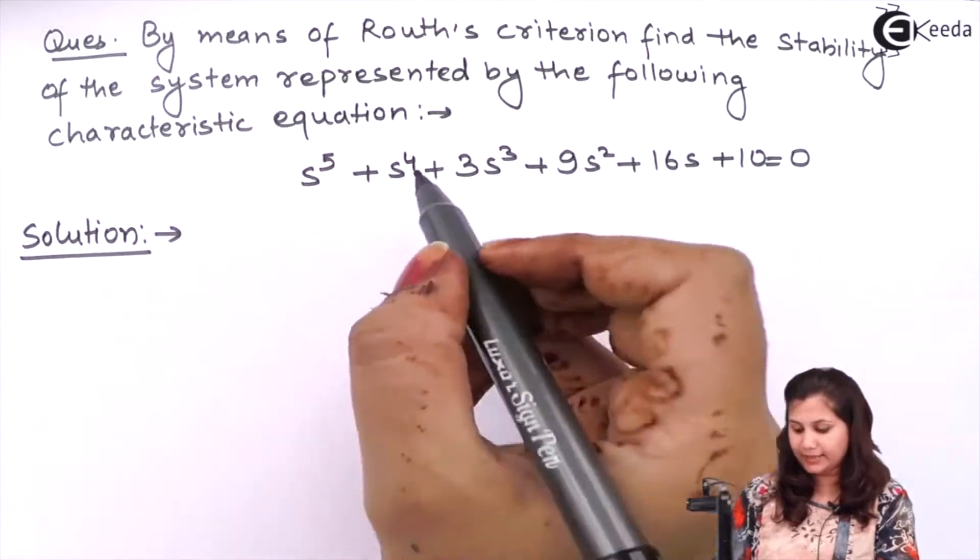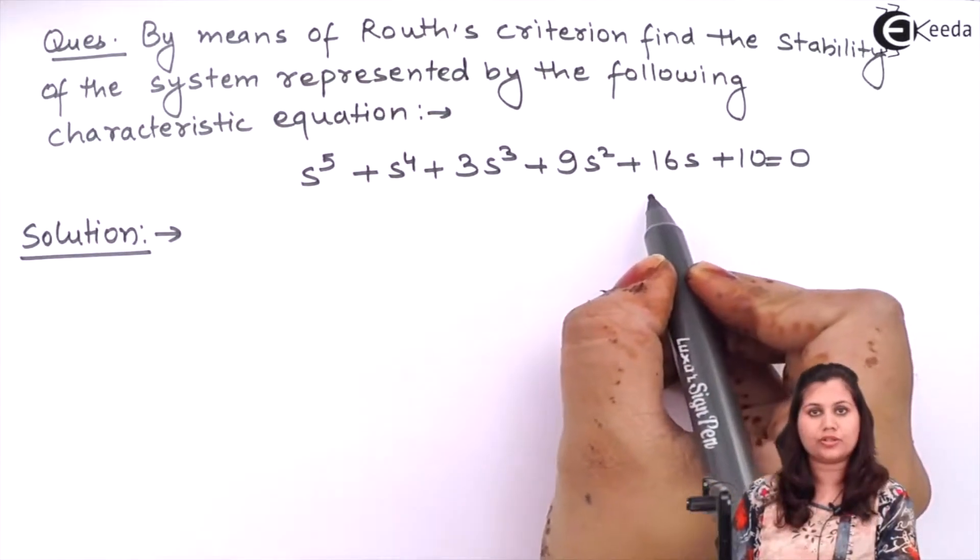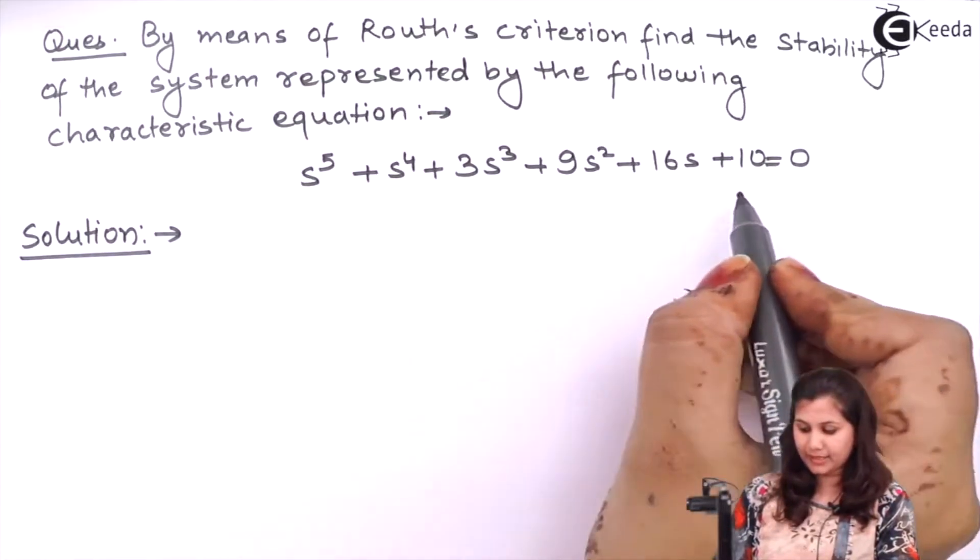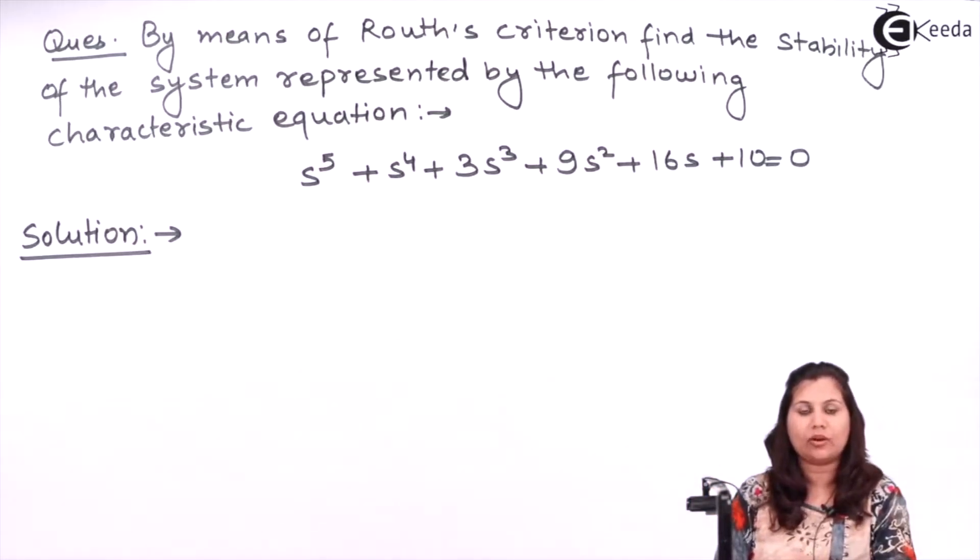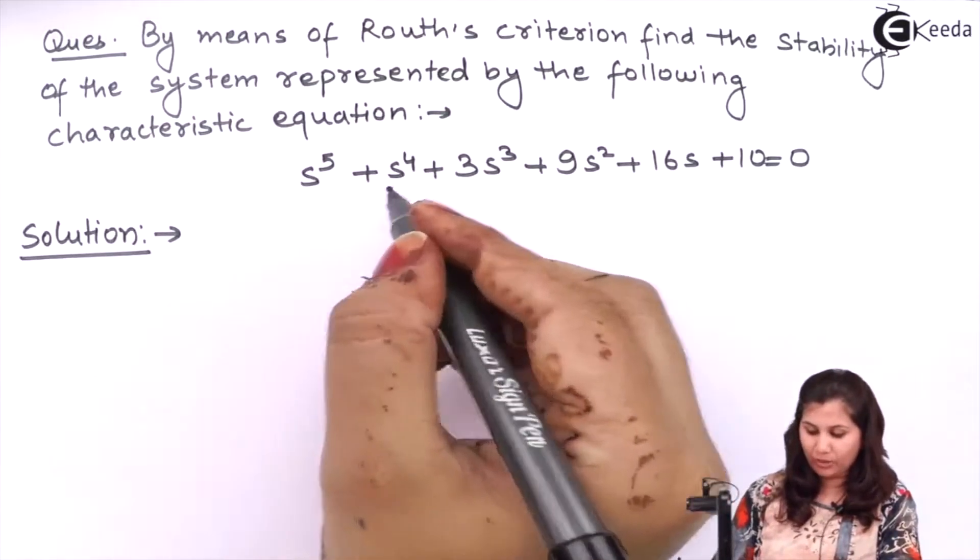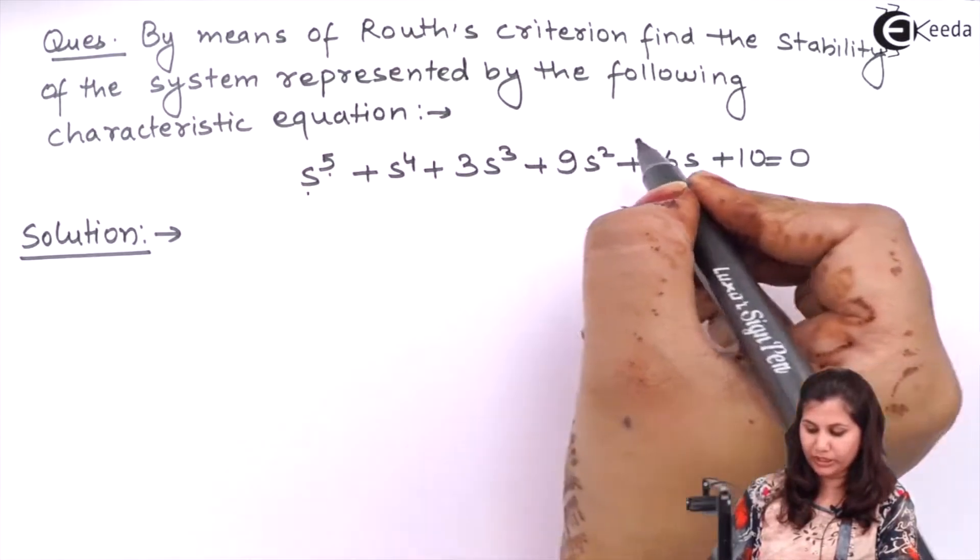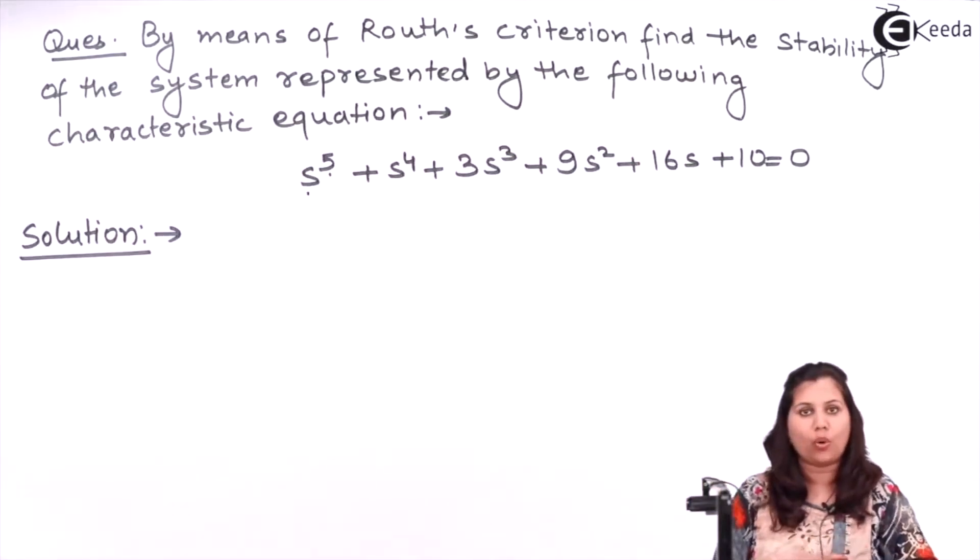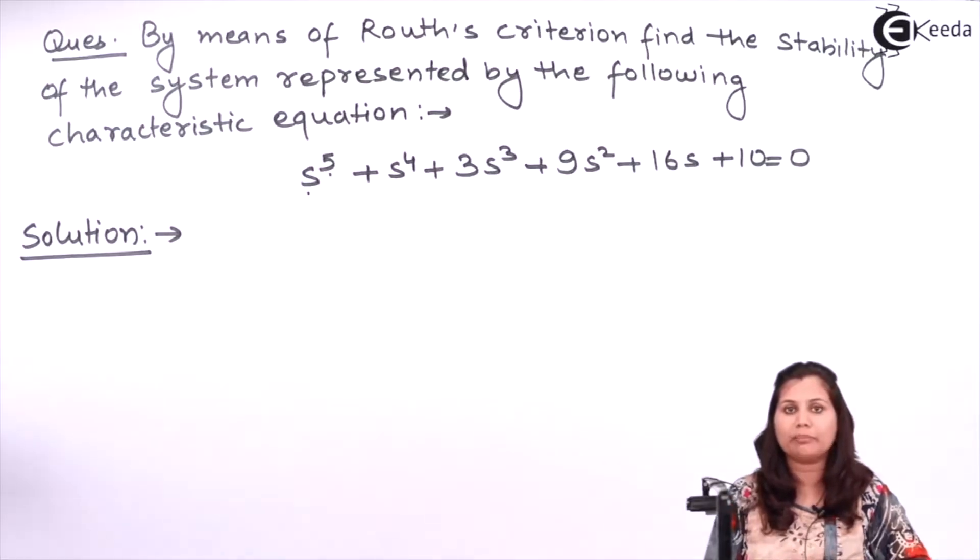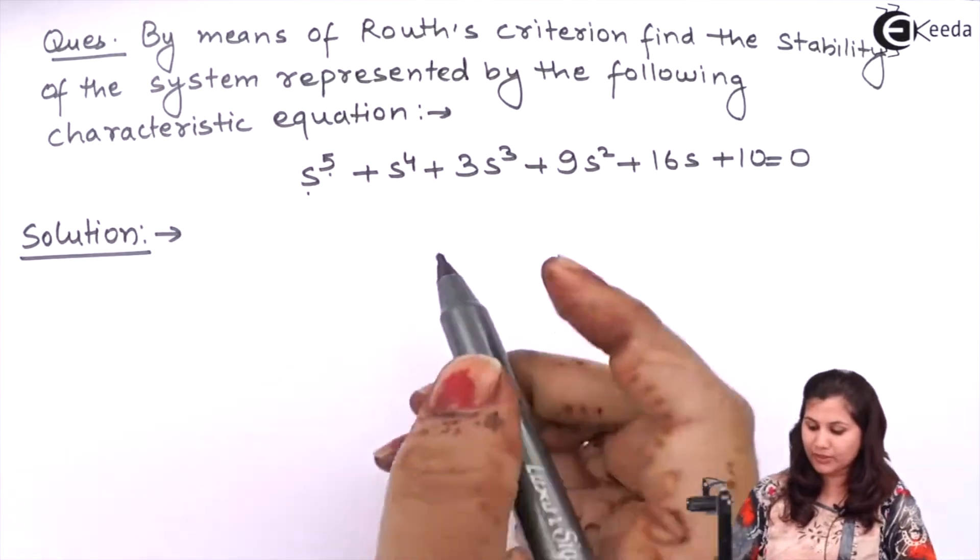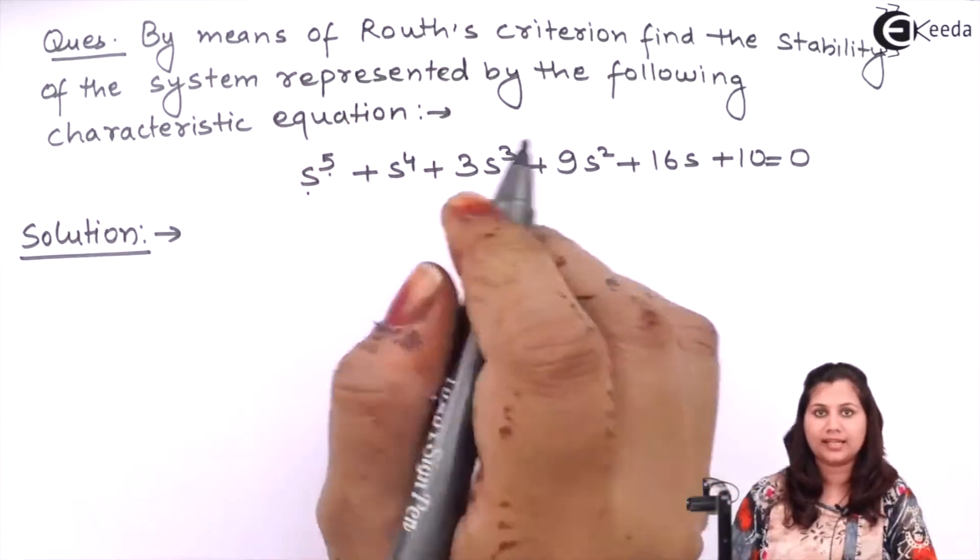First, see that is there any coefficient of this characteristic equation missing or is it zero. We are having all the coefficients: s to the power 5, 4, 3, 2, 1, 0. So all the coefficients from s to the power 5 to s to the power 0, they are present. And there is no sign change in this equation.